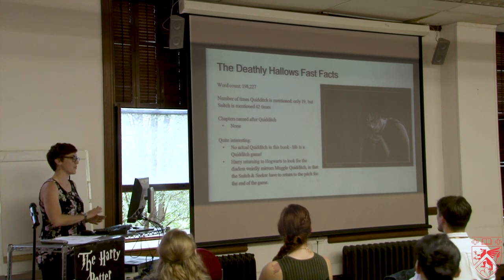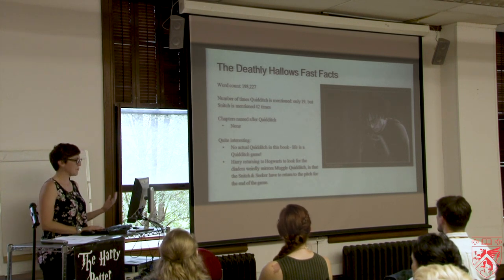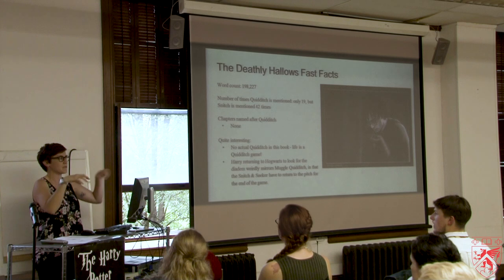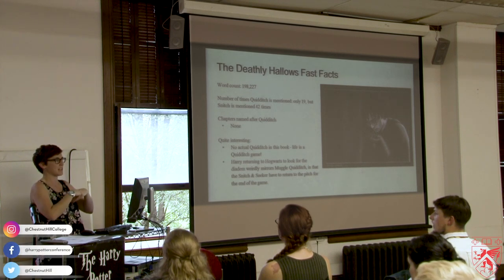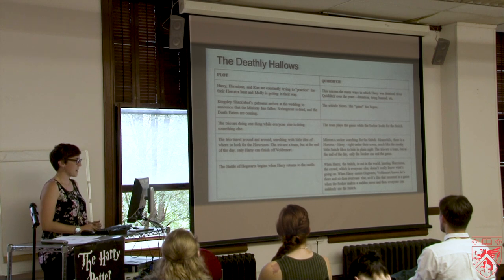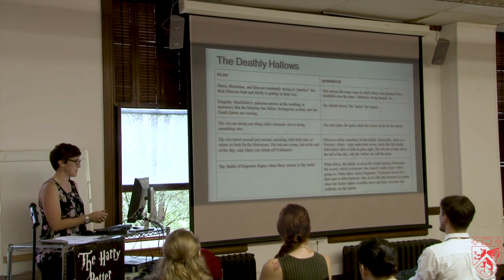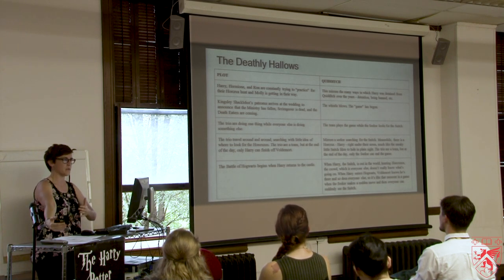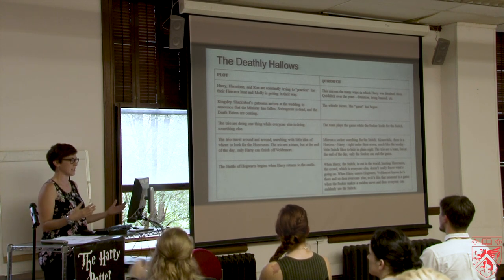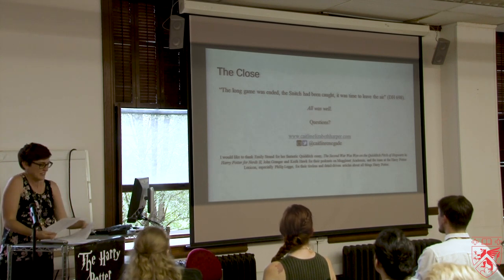Deathly Hallows has no Quidditch because the entire book is a Quidditch match. It mirrors Muggle Quidditch in that at the end of a Muggle Quidditch tournament, the Snitch and the Seeker have to return to the pitch for the end of the game — just like Harry has to come back to Hogwarts for the Battle of Hogwarts. Harry, Ron, and Hermione trying to practice mirrors the ways in which they were detained from practicing Quidditch over the years. Kingsley's whistle blows and the game has begun; the trio is doing one thing while everyone else does another, like a Seeker doing one thing while the team does another. In the Battle of Hogwarts, the trio travels around trying to find the Horcrux — the Snitch. And then the long game has ended, the Snitch has been caught, it was time to leave the air. And all was well.